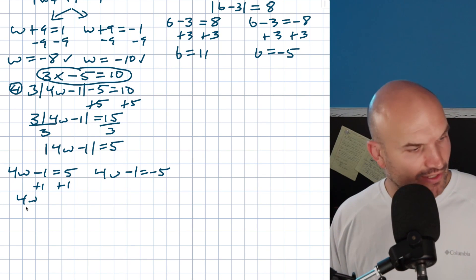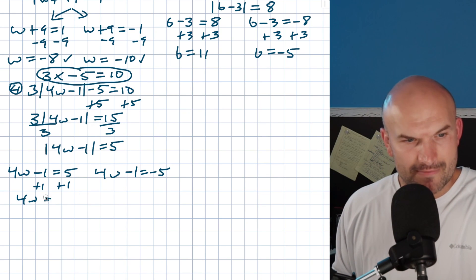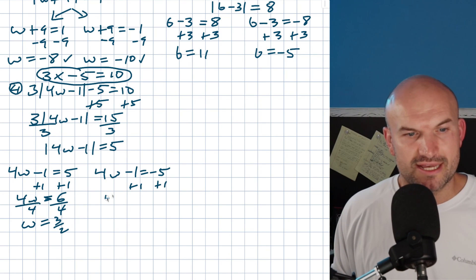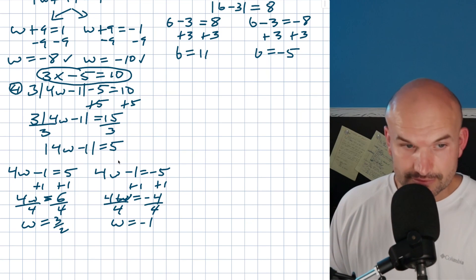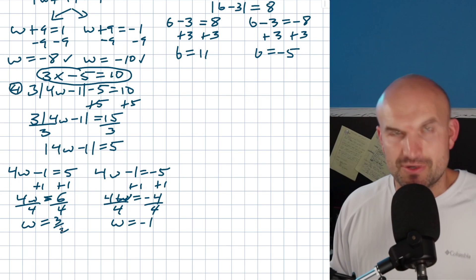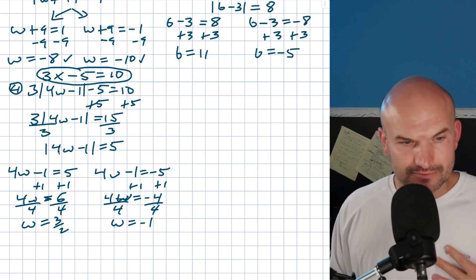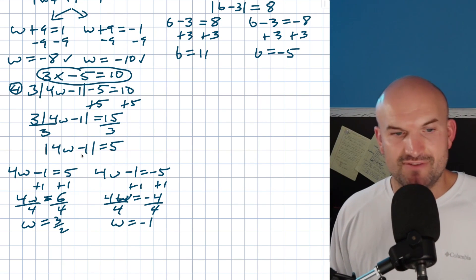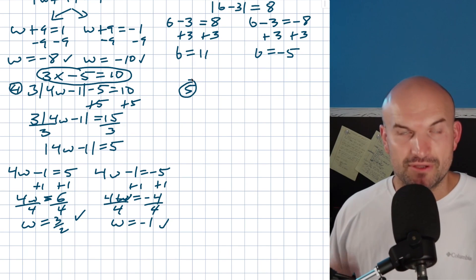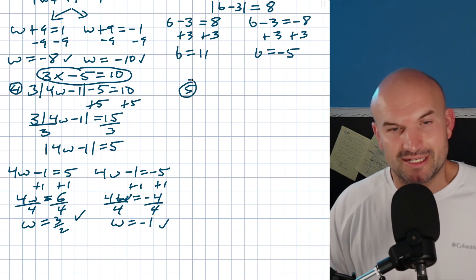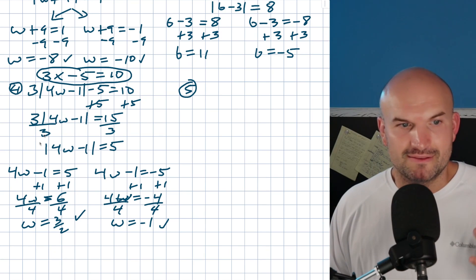Each case is now a two-step equation. Undo addition and subtraction first, then divide by 4. For the first case, w equals 3/2. For the second case, 4w equals negative 4, so w equals negative 1. Checking: 4 times 3/2 is 6, minus 1 is 5 — that works. 4 times negative 1 is negative 4, minus 1 is negative 5 — that also works. When the absolute value equals just one number, you generally shouldn't encounter extraneous solutions.